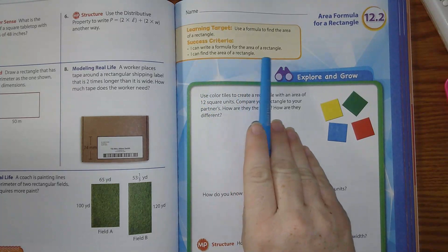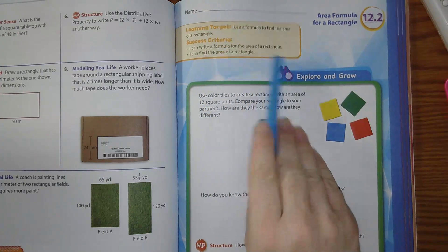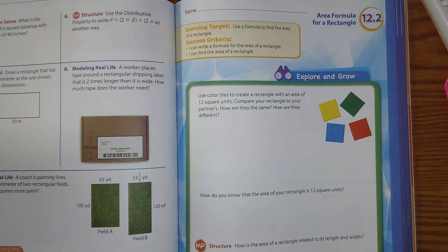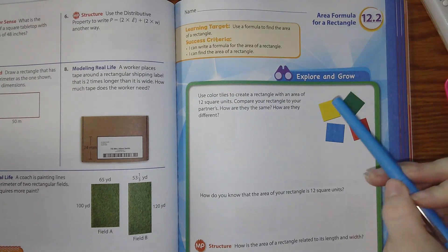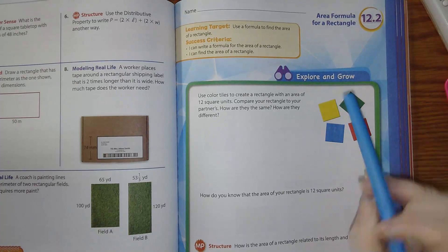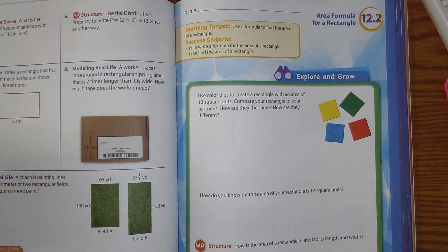For the area of a rectangle, I can find the area of a rectangle. Give me a big thumbs up if we have ever seen area before. So the other day we looked at perimeter and perimeter was adding up all of the sides. Area is not adding up all of the sides. Area is finding what fits inside of it.